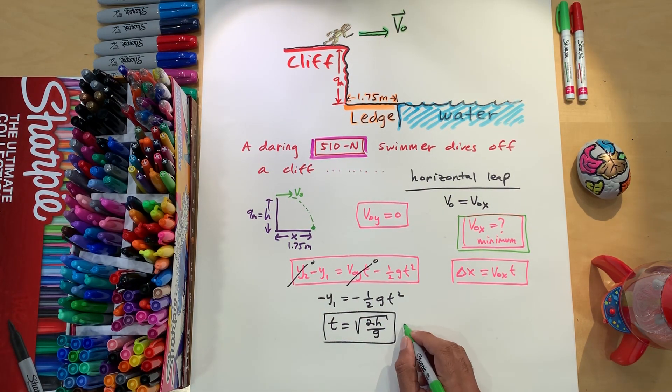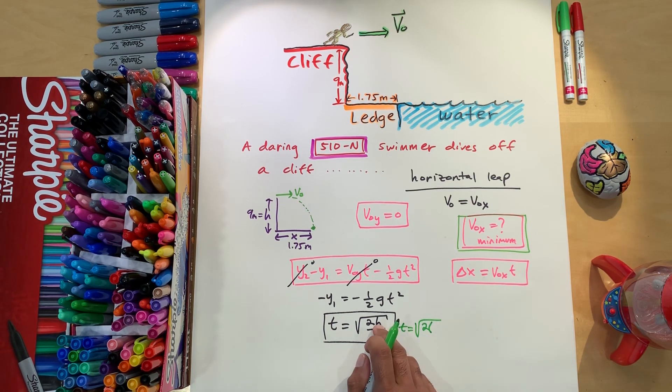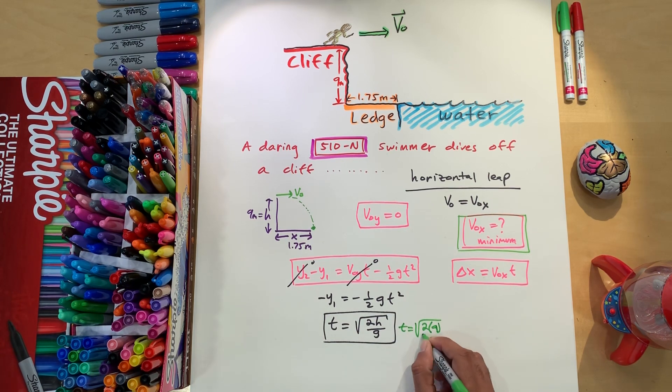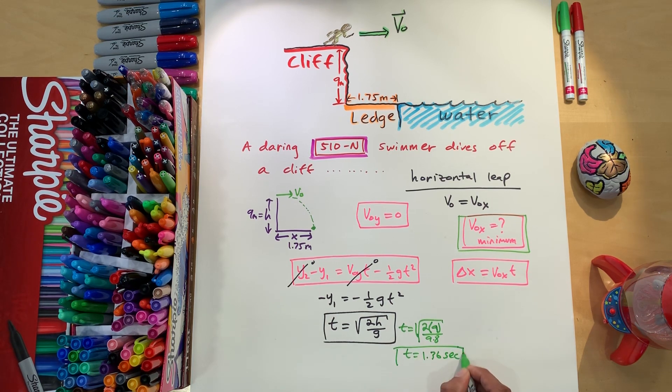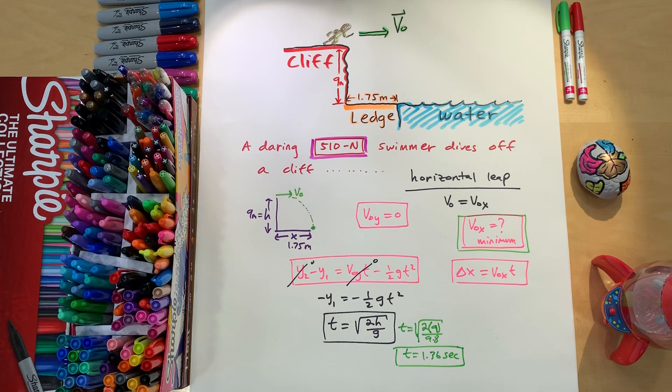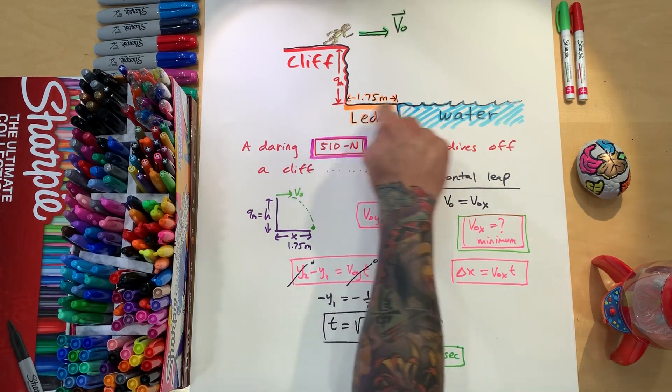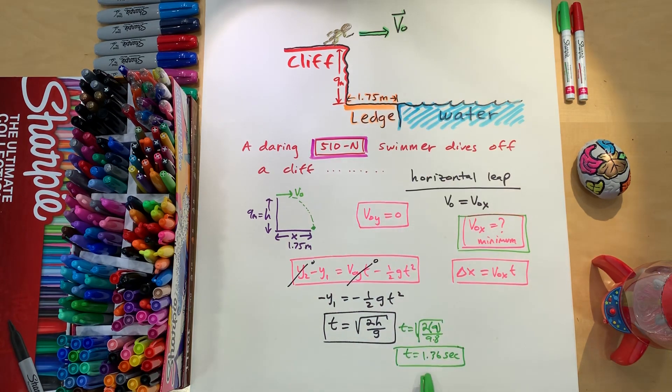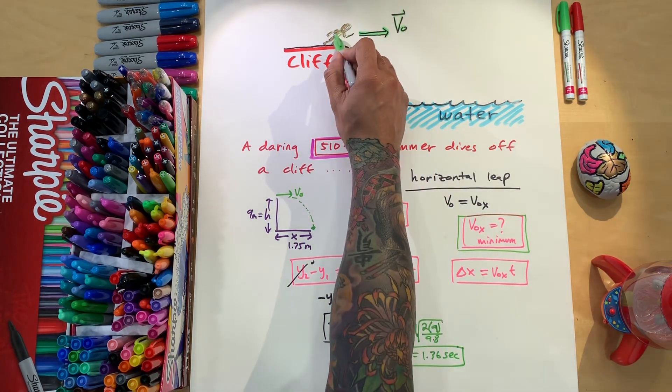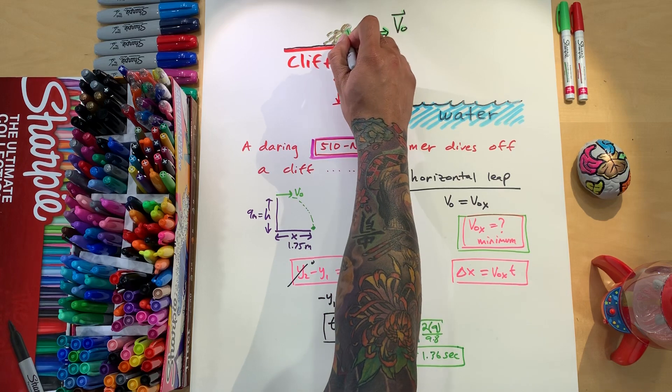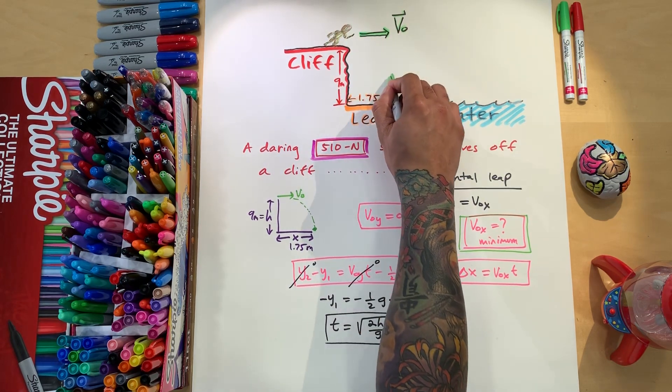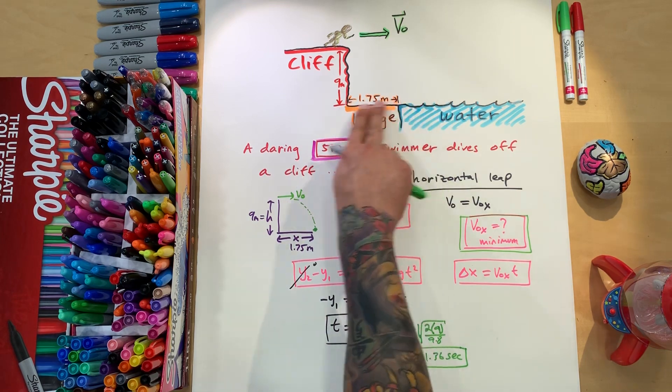I'm going to put T is equal to square root of 2, and in parentheses, the Y1 is 9, and then 9.8 is G. All right, and then that's going to give us time is equal to 1.36 seconds. So that person has 1.36 seconds before they reach this level, this ground level here. Okay, and that's going to be useful information because now we know when they jump, so they're going to jump, and they got 1.36 seconds at least to hit this ground level.